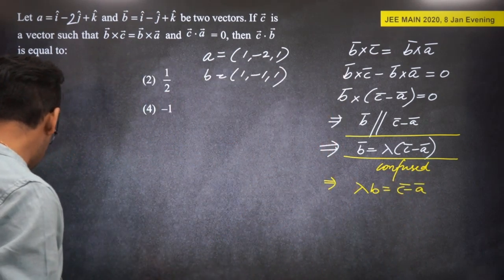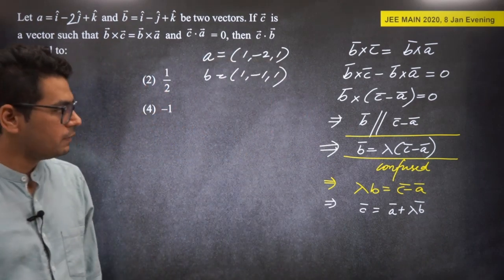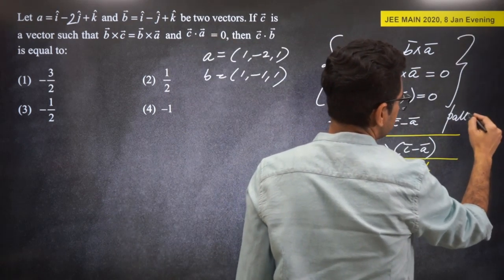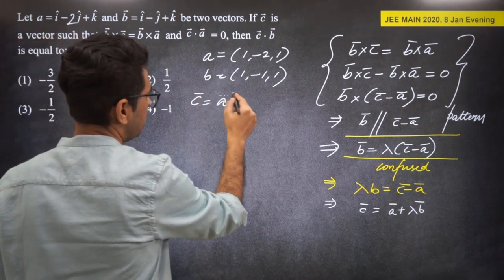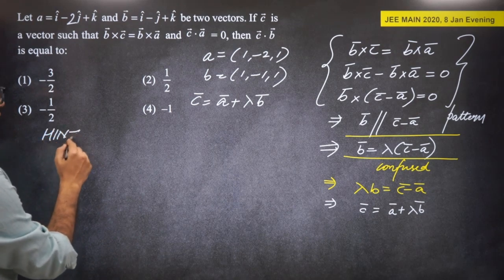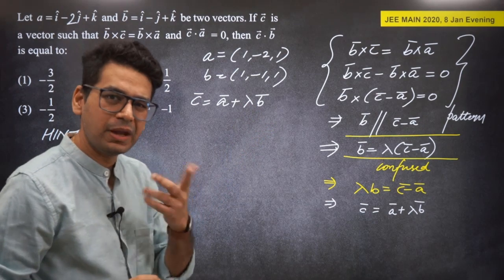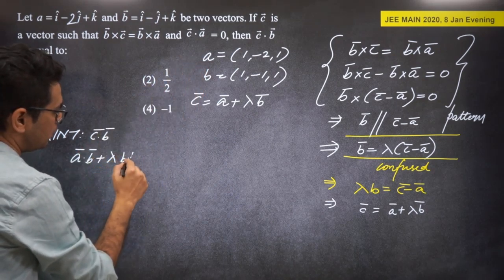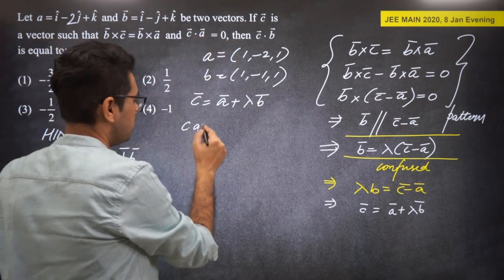Now C·B = (A + lambda*B)·B = A·B + lambda*(B·B). We know B·B = |B|² and we need lambda. Using the condition C·A = 0 (perpendicularity), take dot product with A: C·A = A·A + lambda*(B·A) = 0. Since B·A = 0 (given), and |A|² = 1 + 4 + 1 = 6, wait — we need to use C·A = 0.